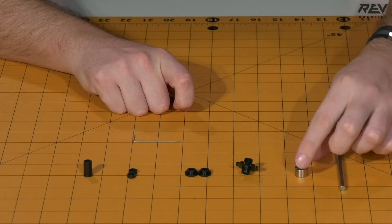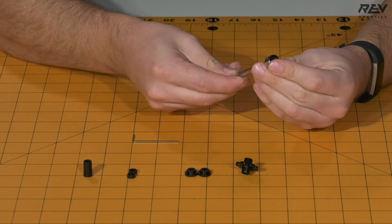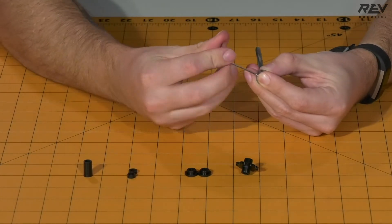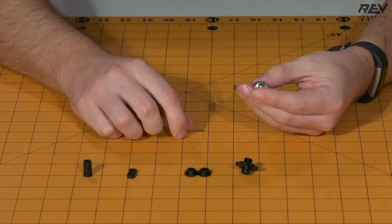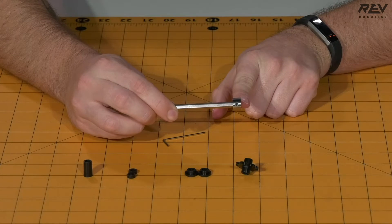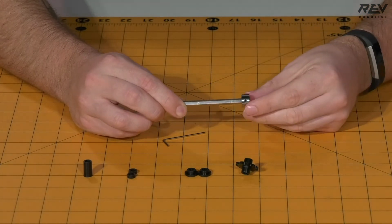To get started with this step, take your shaft collar and the hex shaft. Put the shaft collar flush on the end of the hex shaft and tighten it in place. Make sure the shaft collar is flush with the end of the hex shaft for the rest of the piece placement for this sub-assembly.